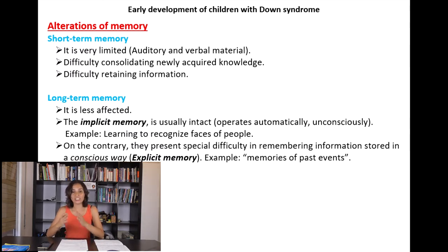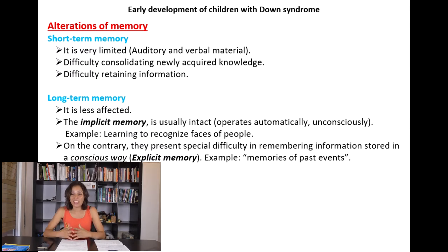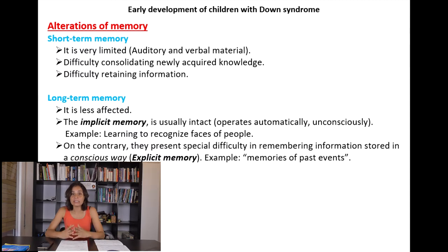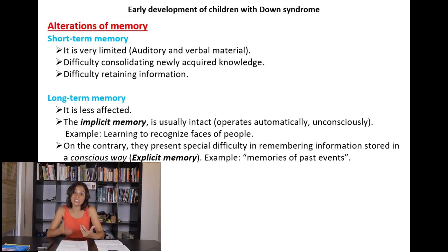Long-term memory is less effective. The implicit memory — the type that operates automatically and unconsciously, such as learning to recognize faces — is usually intact. On the contrary, there is difficulty remembering information stored in a conscious way, which refers to explicit memory. An example of explicit memory would be memories of past events in the individual's life.